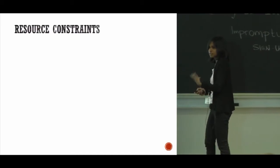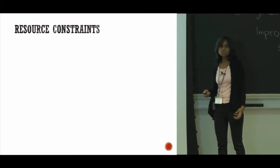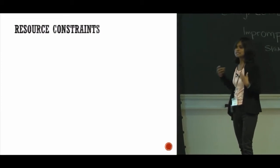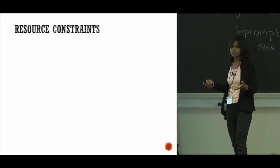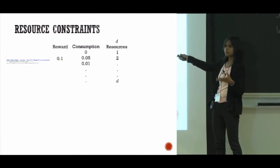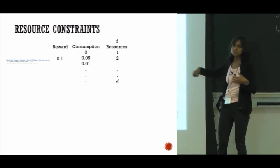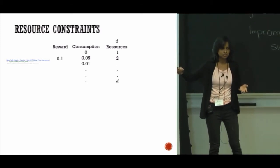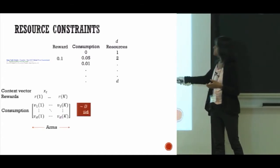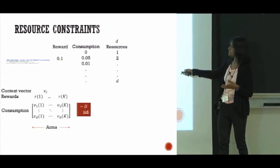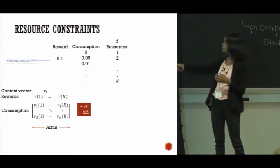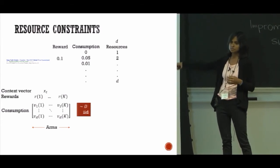We consider a generalization of this setup in which, in addition to generating a reward on pulling an arm, there is also a consumption of certain resources on pulling an arm. So every time you pull an arm like show an ad, it's not just that you see a reward, you see some consumption of resources—for example, it could be consumption of the advertiser's budget. Now the stochastic assumption is that not just the context and the reward, but also the consumption is generated from this unknown underlying distribution. And there could be arbitrary correlations between context, rewards, and consumptions.